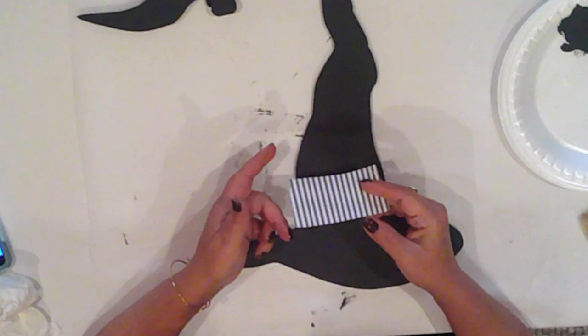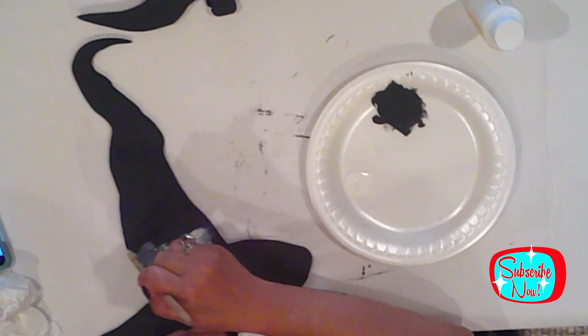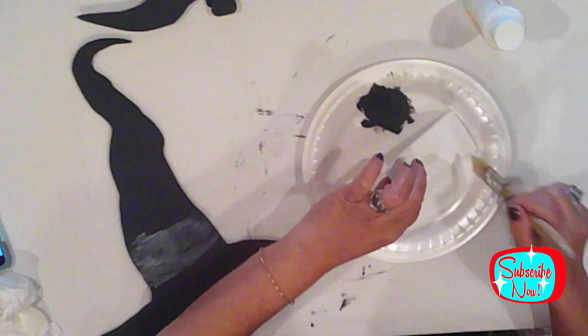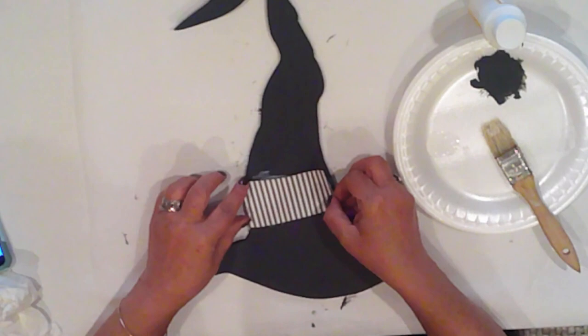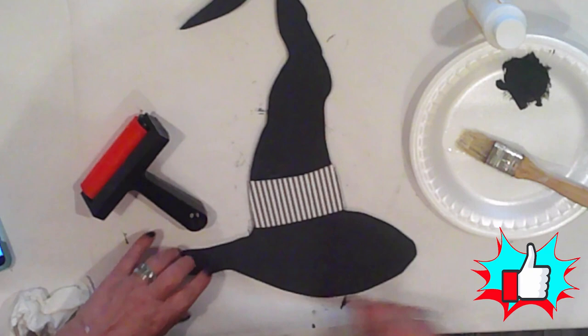Using Mod Podge, I'll fix this cute striped band to the hat. First, I apply a coat to the hat, then to the back of the paper. I'll roll it with my brayer to make sure there's good contact, and then I'll give it a topcoat.